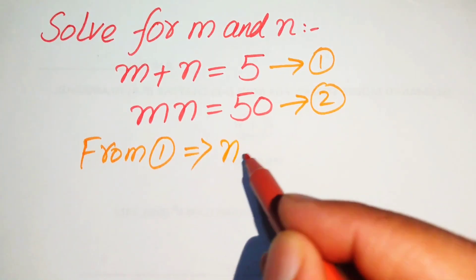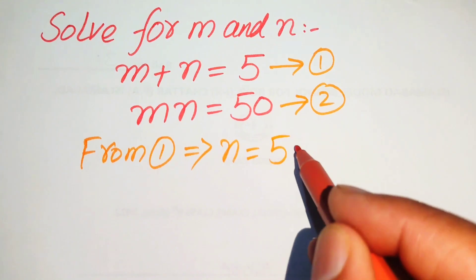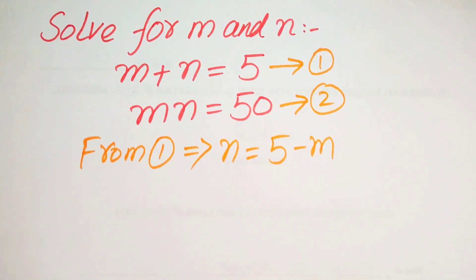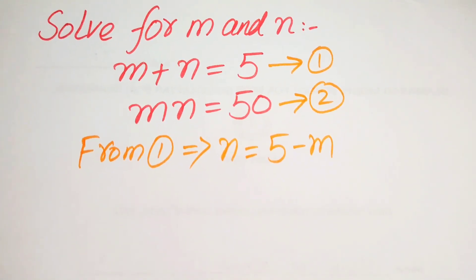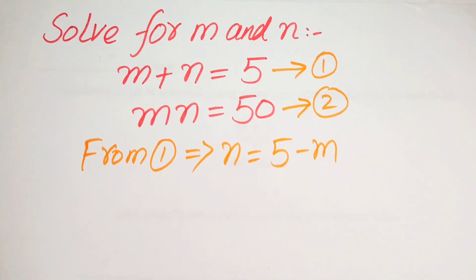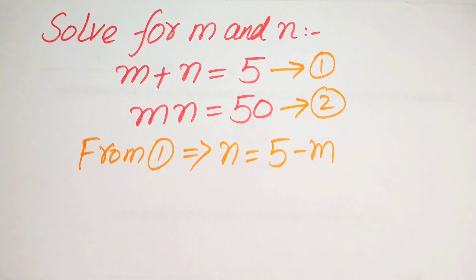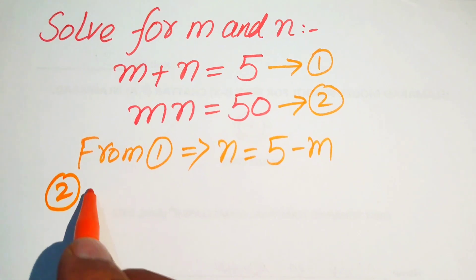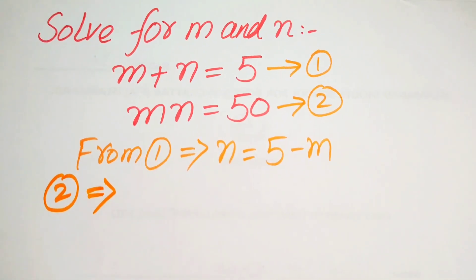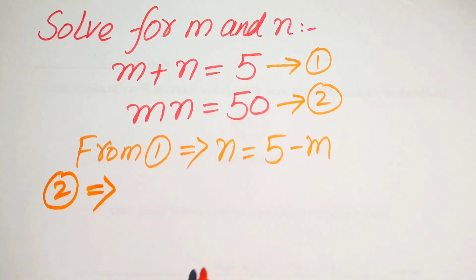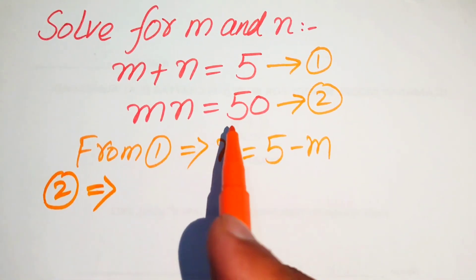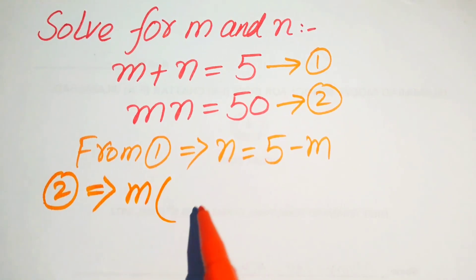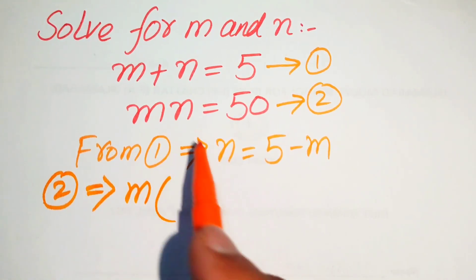From equation 1, we get n equals 5 minus m. In the next step, we substitute this value of n into equation number 2, so equation 2 becomes m times n, and the value of n is 5 minus m, equals 50.